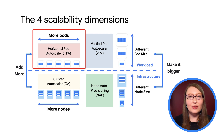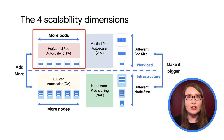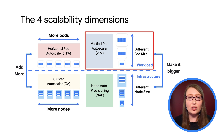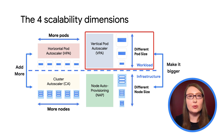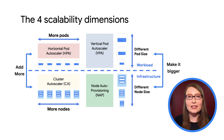The Horizontal Pod Autoscaler, or HPA, can increase or decrease the number of pods running your workload according to demand. And the Vertical Pod Autoscaler, or VPA, can help you understand the resources your workload actually needs, so you can set resource requests and limits appropriately.